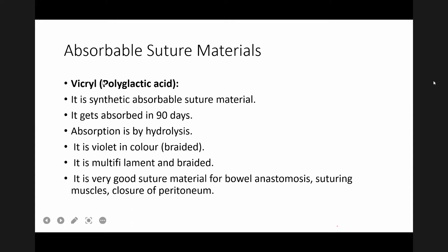Another absorbable suture material is polyglycolic acid, brand name Vicryl, produced by Ethicon, Johnson & Johnson. It is a synthetic absorbable suture material that gets absorbed in 90 days. It is a braided or multifilament suture, absorbed by hydrolysis, violet in color. The same suture can be placed into different classifications. It is very good suture material for bowel anastomosis, suturing muscle, and closing the peritoneum.